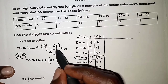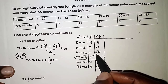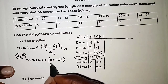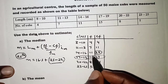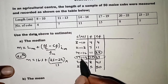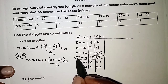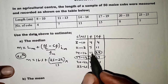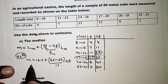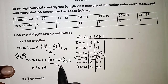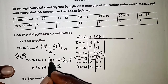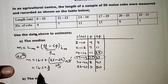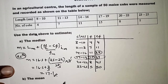We subtract the cumulative frequency just above the median class, which is 22, then divide by the frequency of the median class, which is 15, and multiply by the class interval: 19.5 − 16.5 = 3. So the calculation is 16.5 + (25 − 22)/15 × 3 = 16.5 + 3/5 × 3 = 16.5 + 0.6 × 3. The final result is 17.5. That is the median.